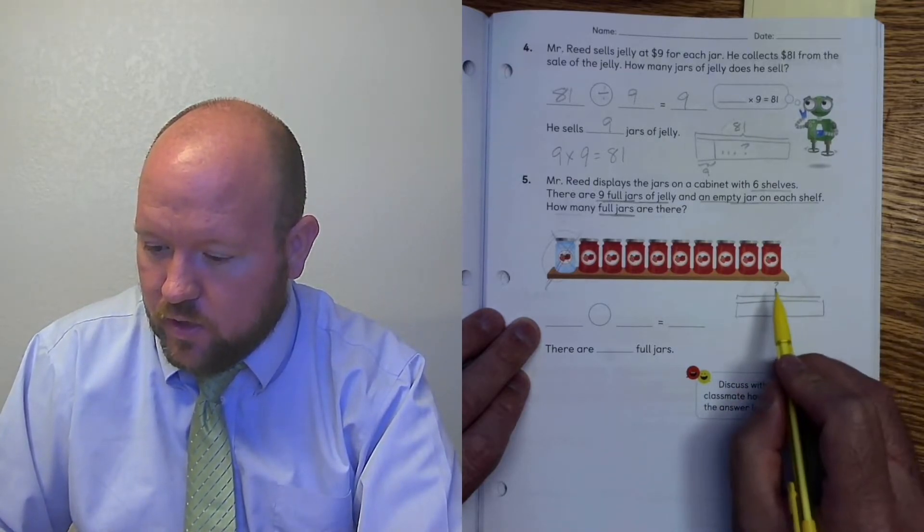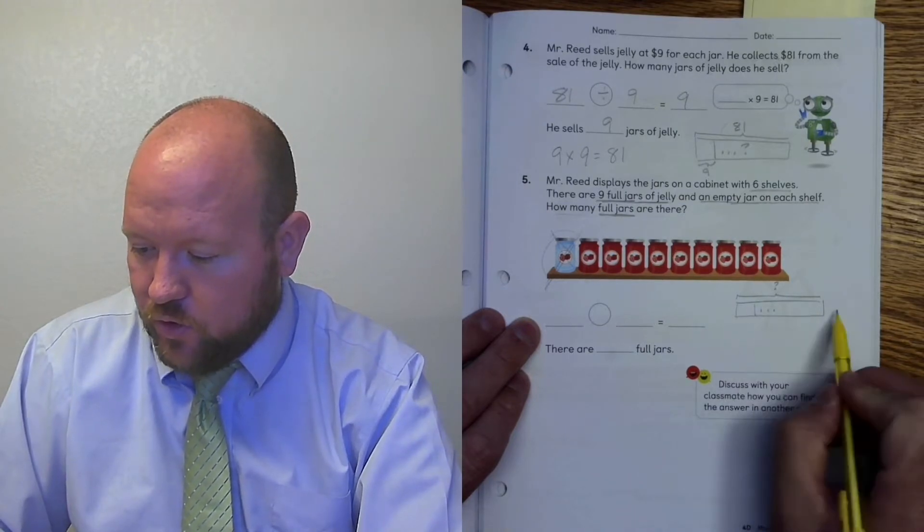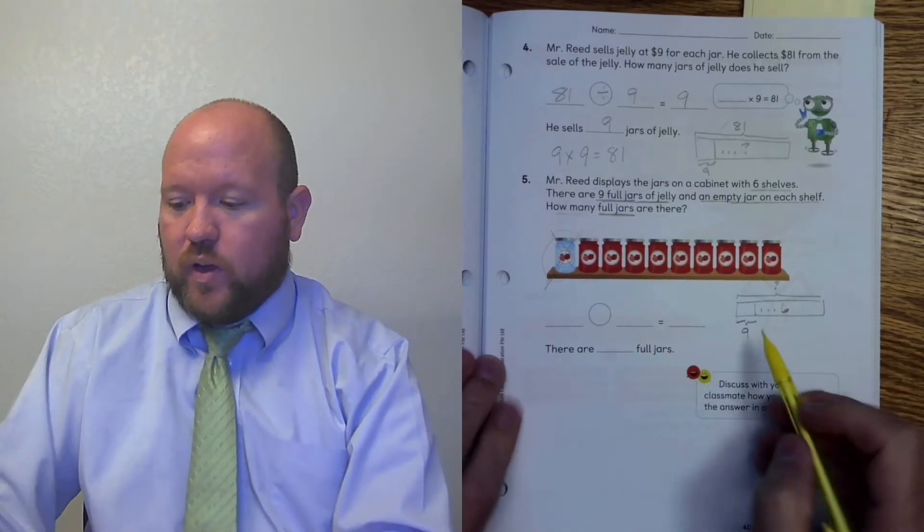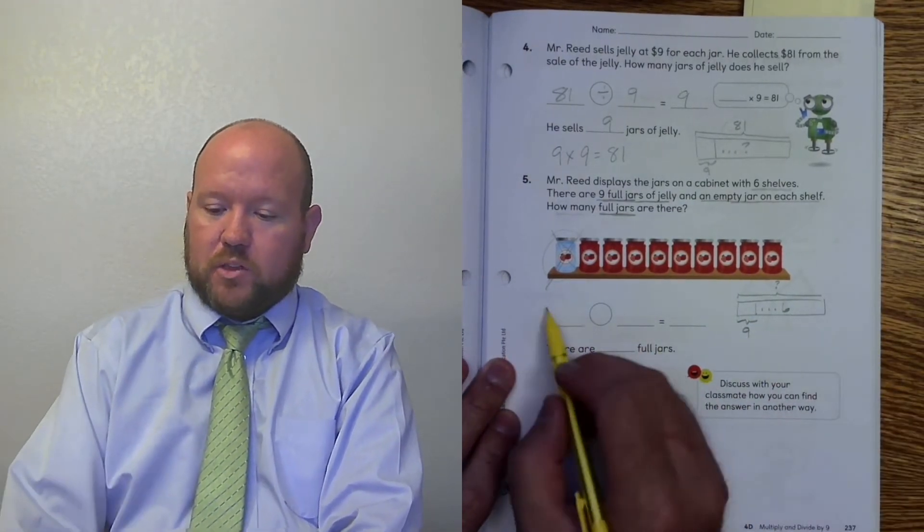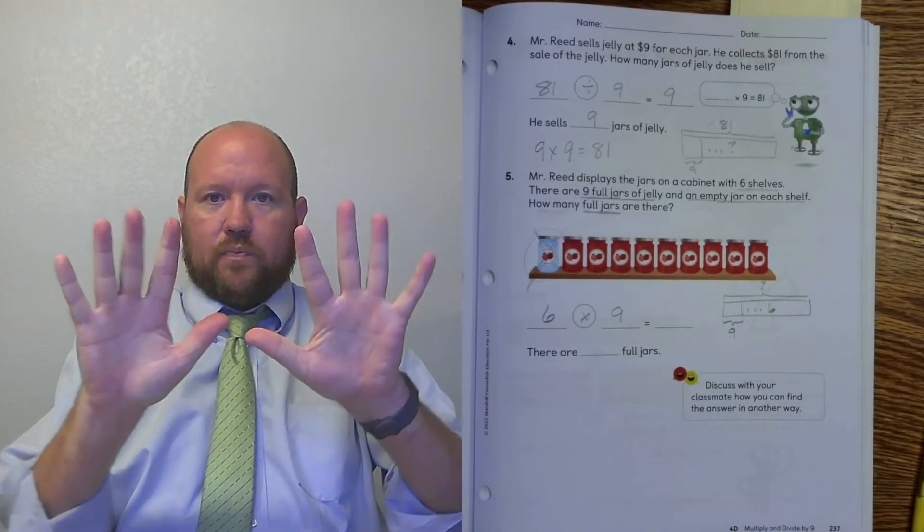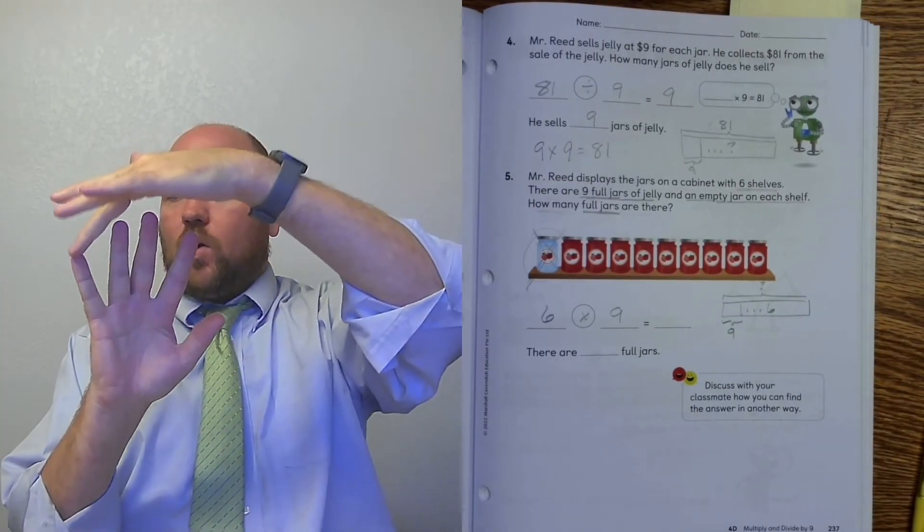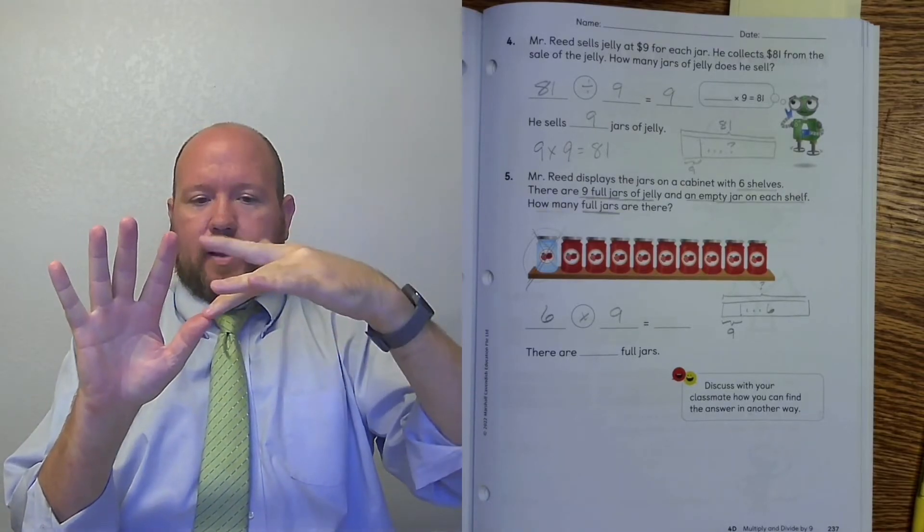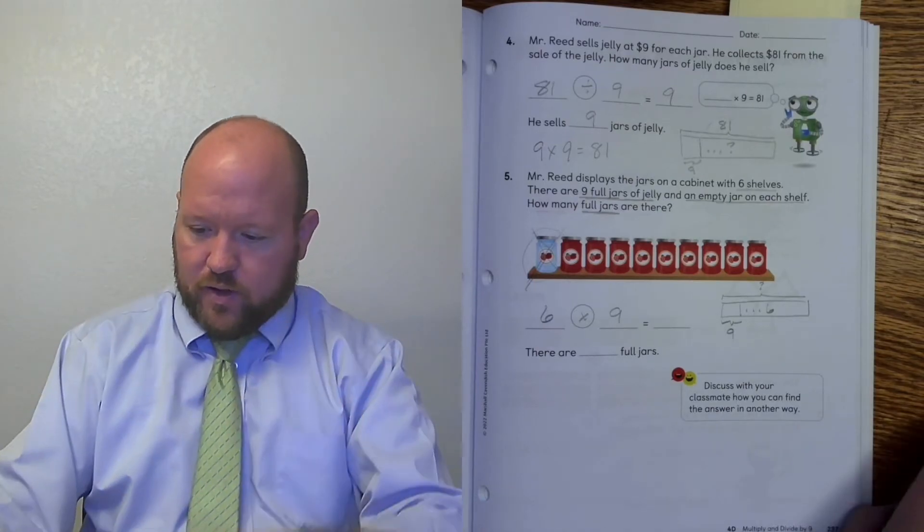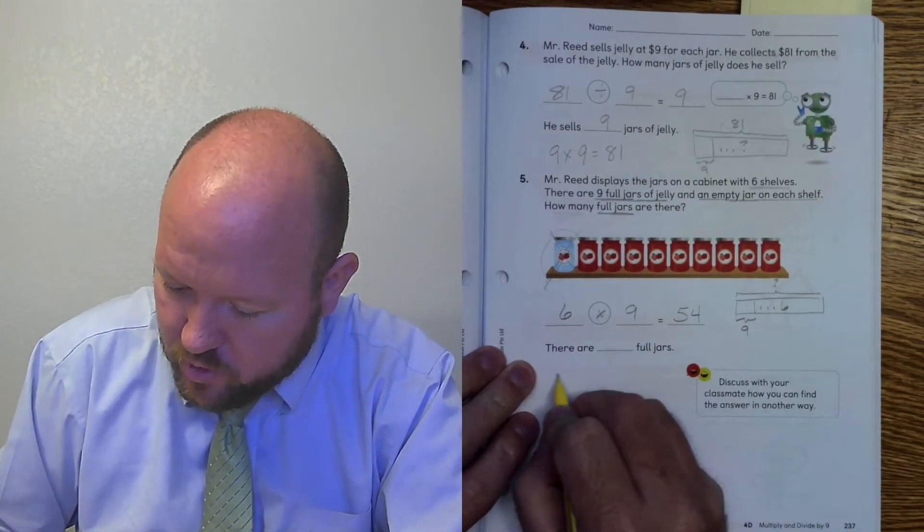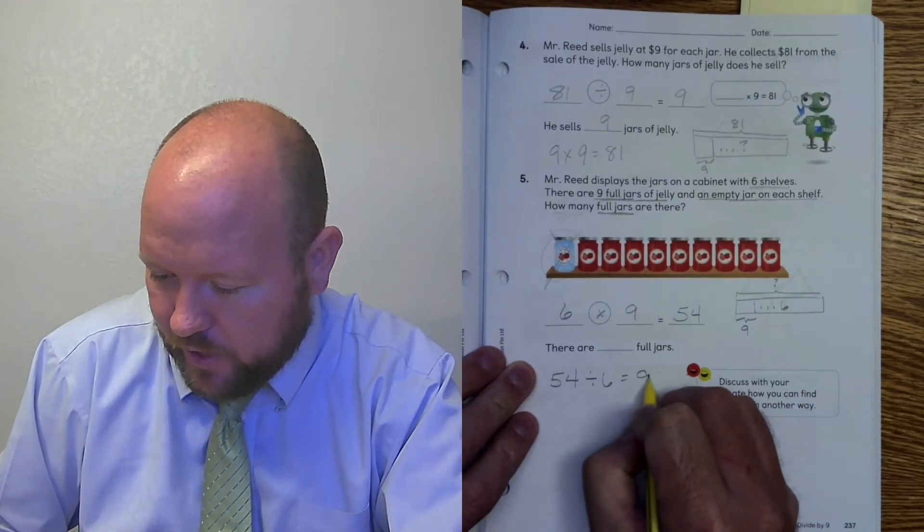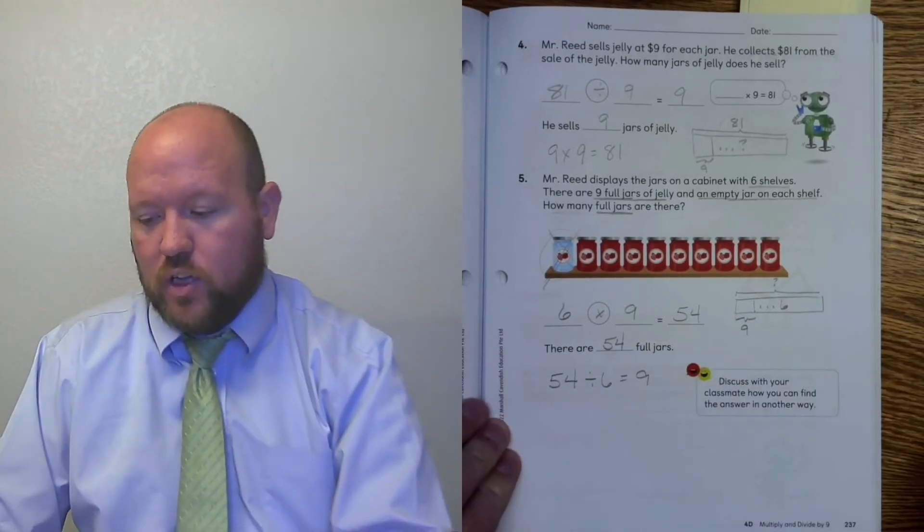So we're trying to see how many jars there are. There are 6 shelves. And you can draw 5 lines or do it like this. And each one is 9. So I have 6 groups of 9. How do I figure that out? I think it's multiplication. 6 times 9. 1, 2, 3, 4, 5, 6. Put that down. 5, 4. 54. And that's true because 54 divided by 6 equals 9. And so he has 54 full jars.